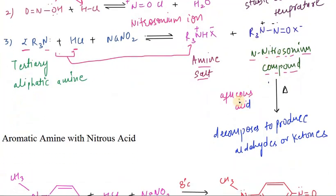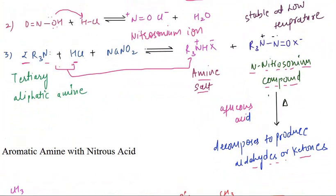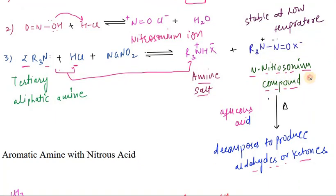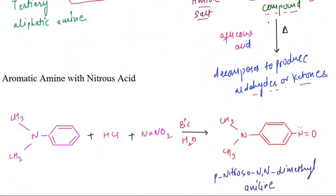When it is heated in presence of aqueous acid, it decomposes to produce aldehyde or ketone. That compound we need to keep at low temperature when we need this compound. Tertiary aliphatic amine: two moles give one mole of amine salt and one mole of N-nitrosonium compound at low temperature. When further heated, we get aldehyde and ketone.